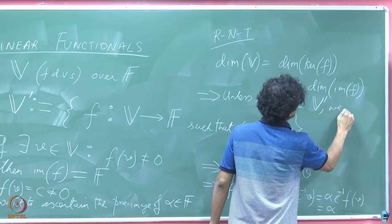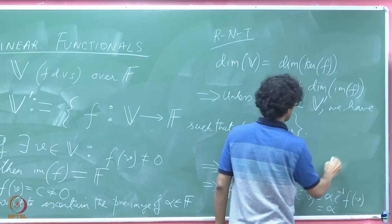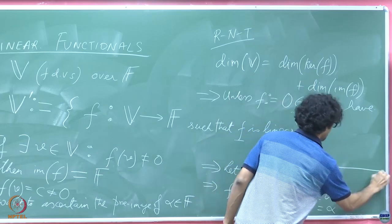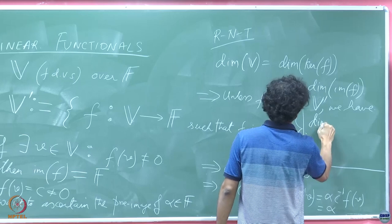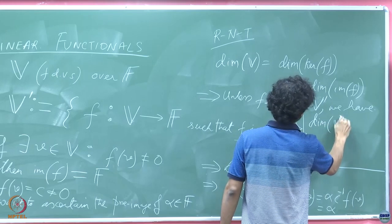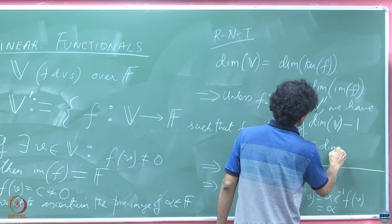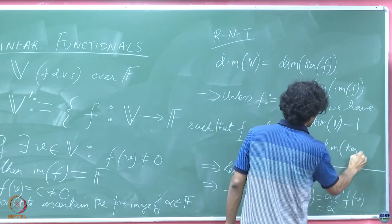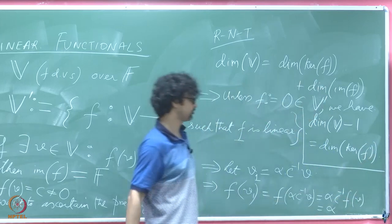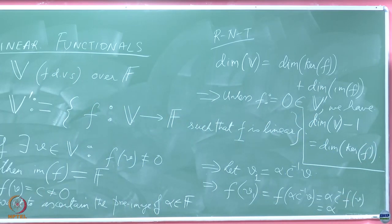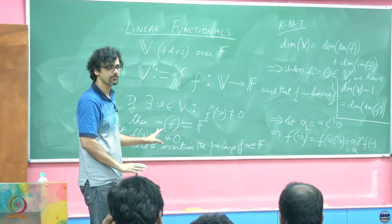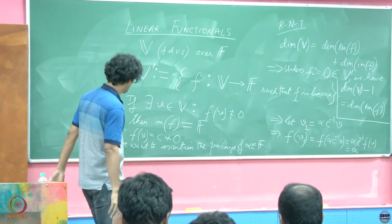Let V1 equal to alpha C inverse V because C is non-zero. Because C is non-zero in the field therefore C has a multiplicative inverse. This implies F of V1 is equal to F of alpha C inverse V. Because of the linearity we can pull it out, so it is alpha C inverse F V but F V is just C. So therefore this is equal to alpha. It is just a formal way of writing what we have just argued.